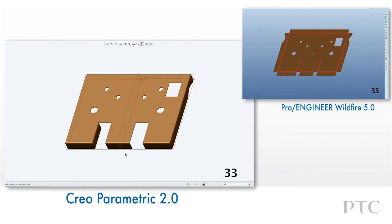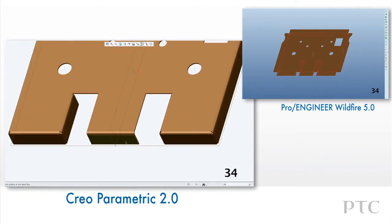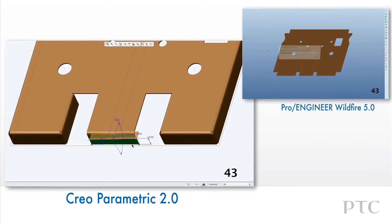Creating a bend feature is also easy by snapping lines to the edges of walls. We can still sketch a section if we want to as well. Once the bend is defined, a preview allows us to refine the direction and angle and make sure it's right the first time.